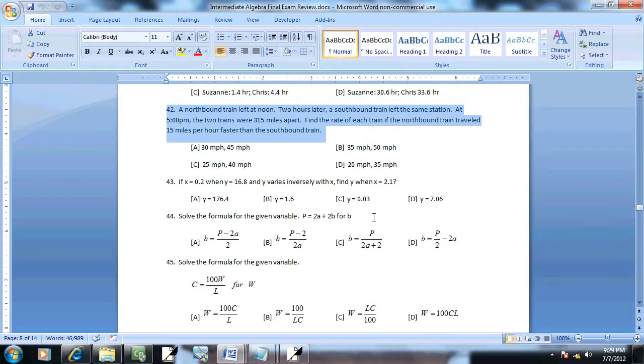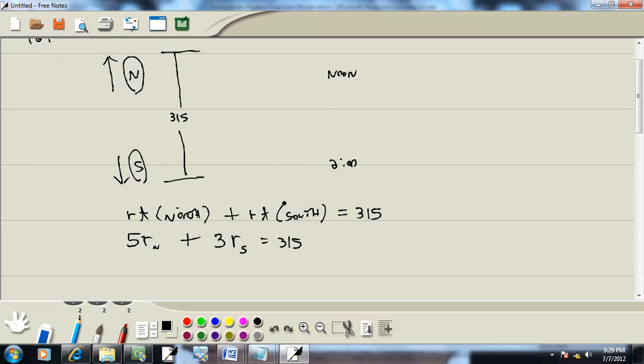Okay let's see what else they give us. They say find the rate of each train if the northbound train traveled 15 miles per hour faster than the southbound. So they're putting the northbound in terms of the southbound.